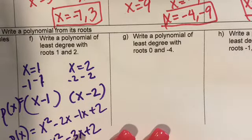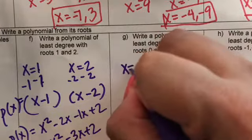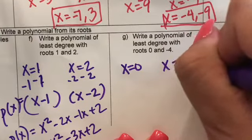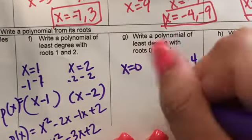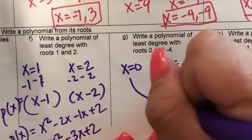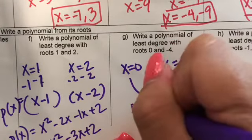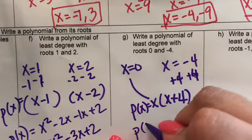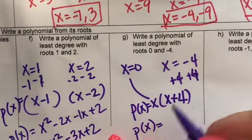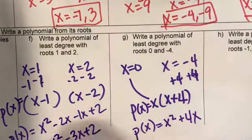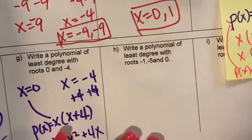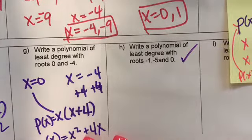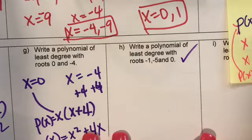Write a polynomial with least degree from roots X equals zero and X equals negative four. Leave the zero root as X and add four to get X plus four equals zero. So P of X equals X times X plus four. Distributing gives X squared plus four X.